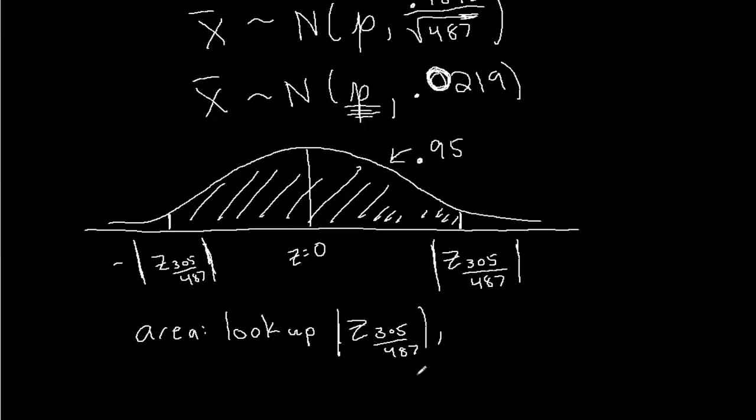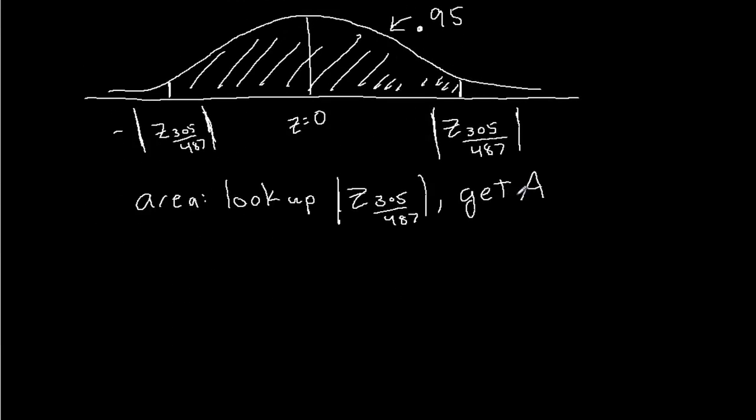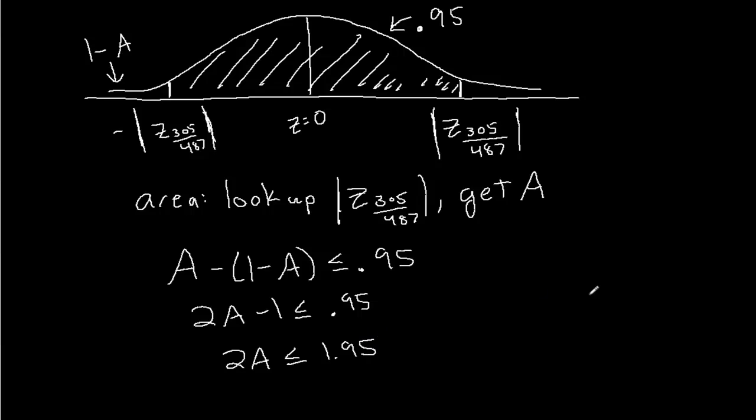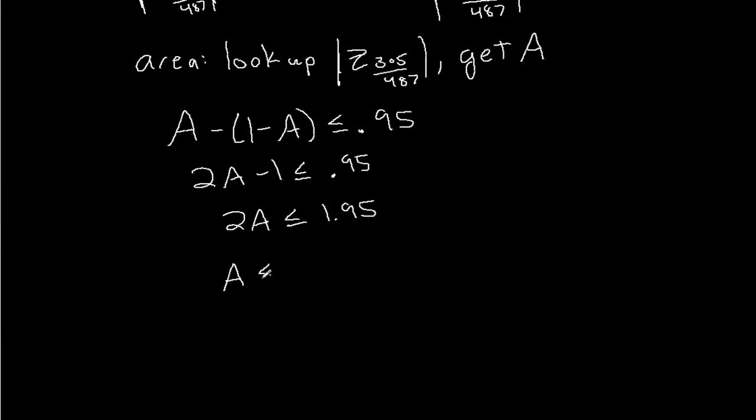So we're going to have to go backwards. I would look up that z-score, and that would give me a value a. Now that value a would be a little bit too big. This shaded region would be less than the value a, because when I look up this z-score with an absolute value, that's going to give me this area plus the extra area over here. Well, I need to subtract the area over here. That area over there is going to be 1 minus a. So we want that a minus 1 minus a is no larger than 95%, 0.95. Well, that gives us that 2a minus 1 is no larger than 0.95, which tells us 2a is no larger than 1.95. So we divide both sides by 2, and we get that a needs to be less than or equal to 0.975.